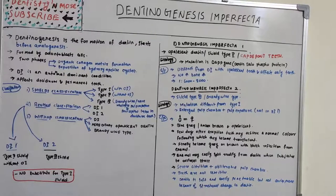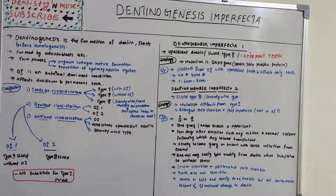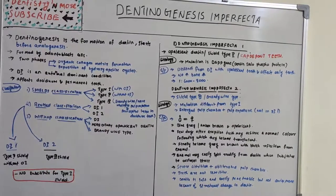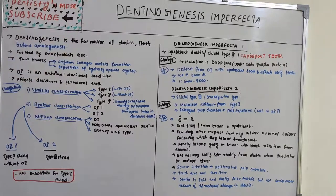Dentinogenesis is the formation of dentine, which starts even before amelogenesis. So the first tooth element to form is dentine; only after that does enamel form. Dentinogenesis is the first process in tooth formation, carried out by odontoblasts. There are two phases: first, organic collagen matrix formation, then deposition of hydroxyapatite crystals.